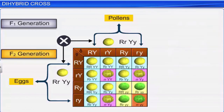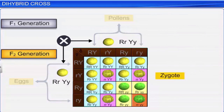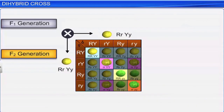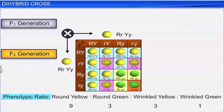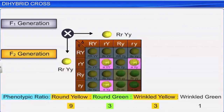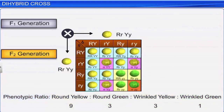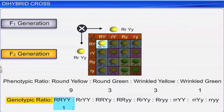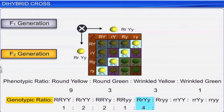The allelic composition of the F2 zygotes can be obtained using the Punnett square. As shown, there are four different types of phenotypes with a phenotypic ratio of 9:3:3:1. However, 9 different genotypes result from the F2 hybrid, and the genotypic ratio is 1:2:2:1:4:2:1:1:2:1.